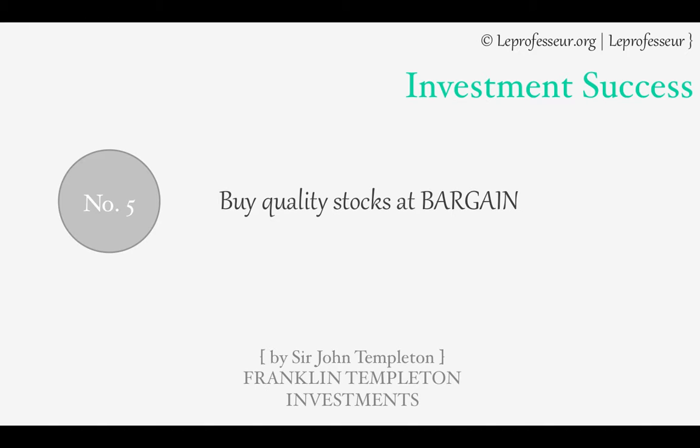Rule number five: buy quality stocks at a bargain. Wait for the opportunity until the price of your chosen quality stocks goes lower. For example, if Apple stock is trading too high for whatever reason — bull market or other conditions — wait until it goes low, until you really see the real value. When the stock is trading near its book value, or the ratio between book value and stock price compares well with other stocks in the sector, then buy.